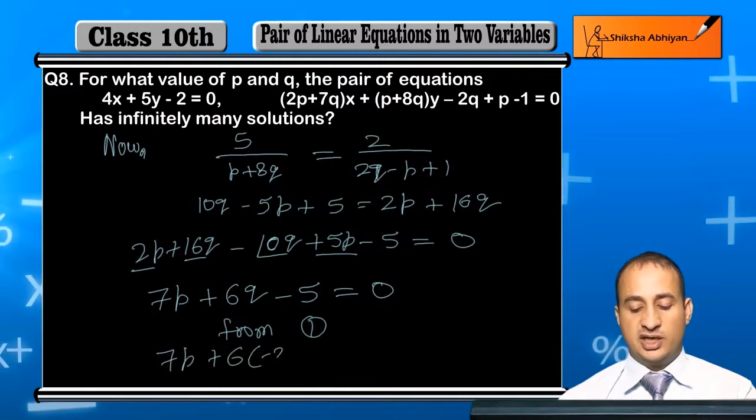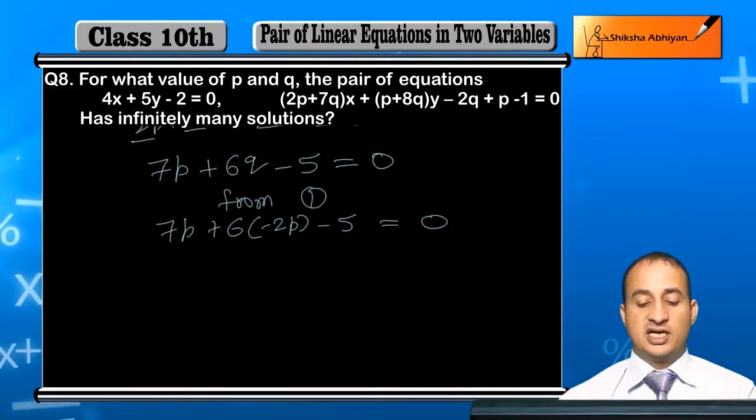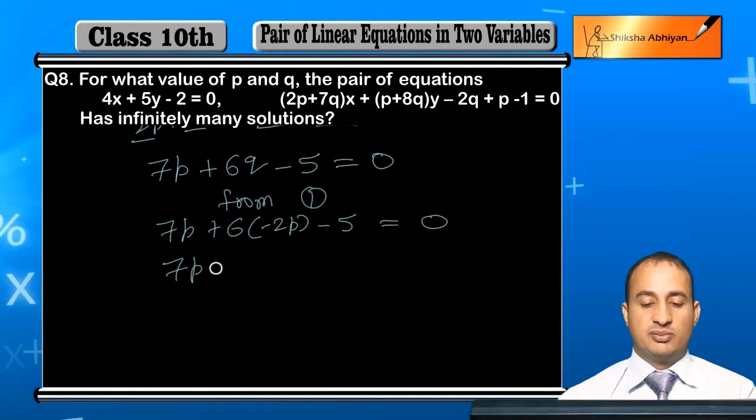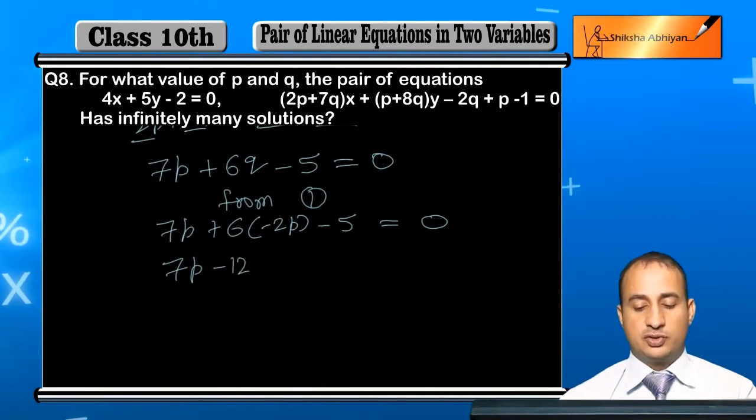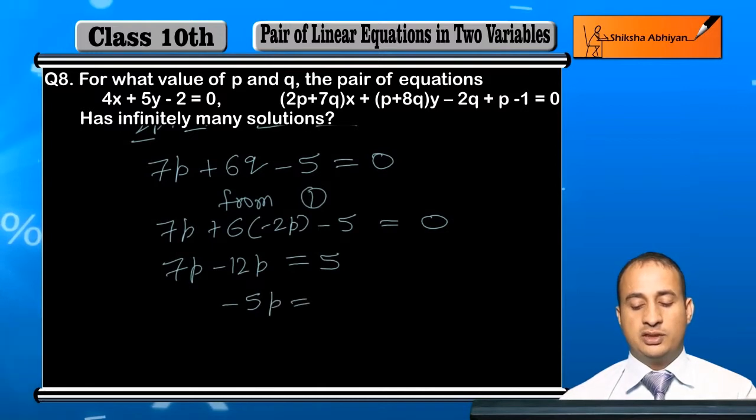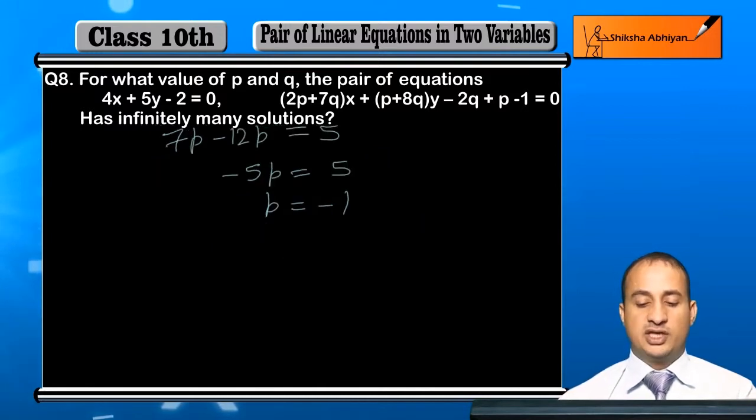So 7P plus 6 times minus 2P minus 5 equal to 0. That is 7P minus 12P minus 5 equal to 0. Moving minus 5 to right: 7P minus 12P equal to plus 5. This is minus 5P equal to 5. And P is equal to minus 1.